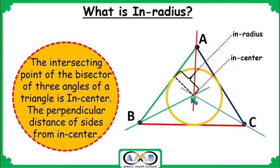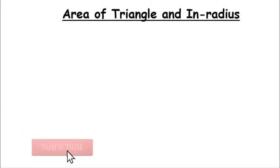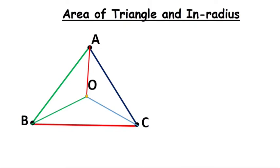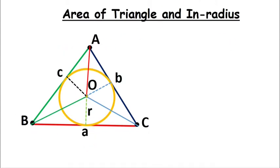Now let's look at the area of a triangle and its relation to the in-radius. Consider triangle ABC where the angle bisectors meet at in-center O. The perpendicular distance from this in-center to each side is the in-radius r. The side opposite vertex A has length a, opposite B has length b, and opposite C has length c. The three angle bisectors AO, BO, and CO divide the whole triangle ABC into three smaller triangles.